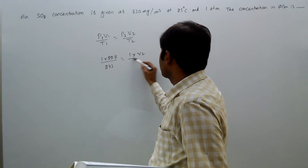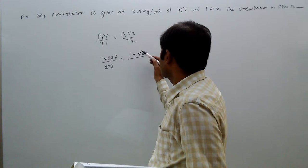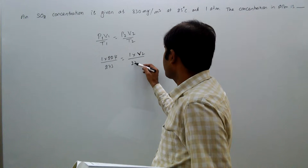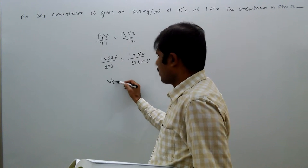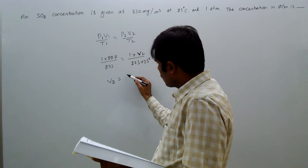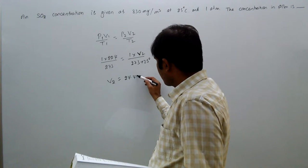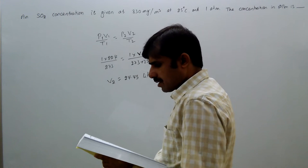v2 unknown, t2 273 plus 25 degrees. So from this v2 equal to 24.45 liters.